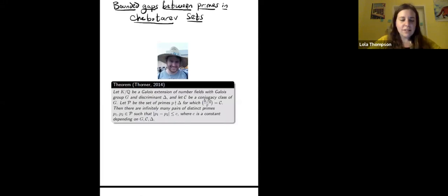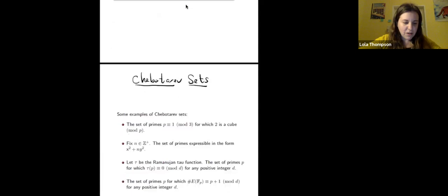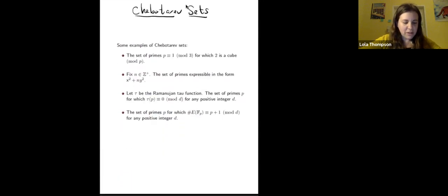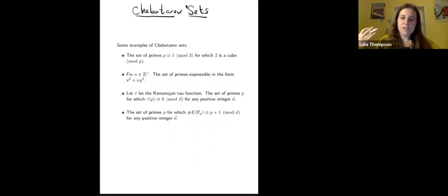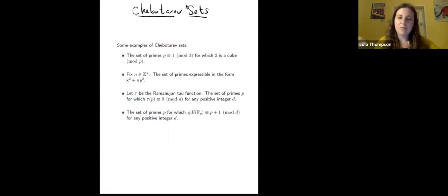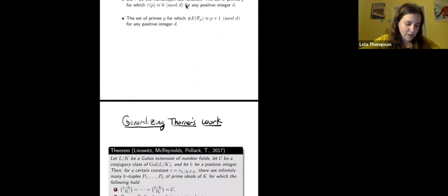There are tons of fun examples of Chebotarev sets — some have to do with the Ramanujan tau function, with the count of 𝔽_p-rational elliptic curves over a finite field 𝔽_p, and so on.